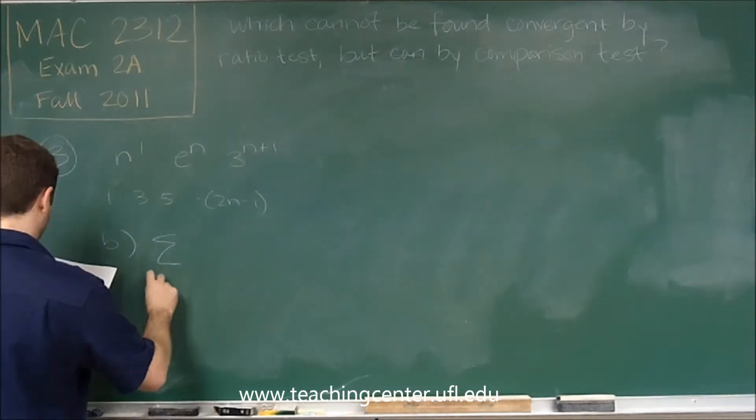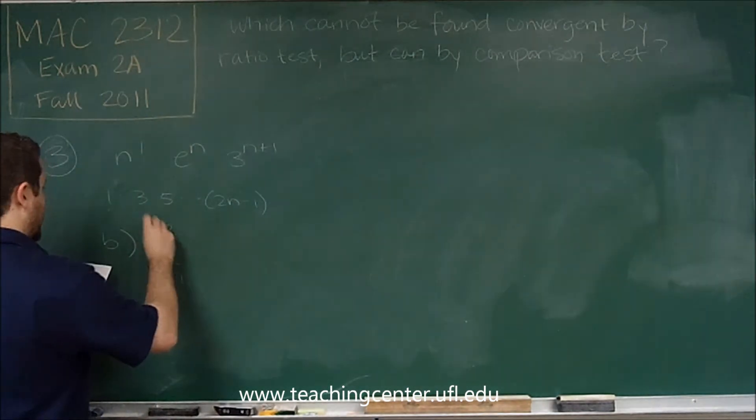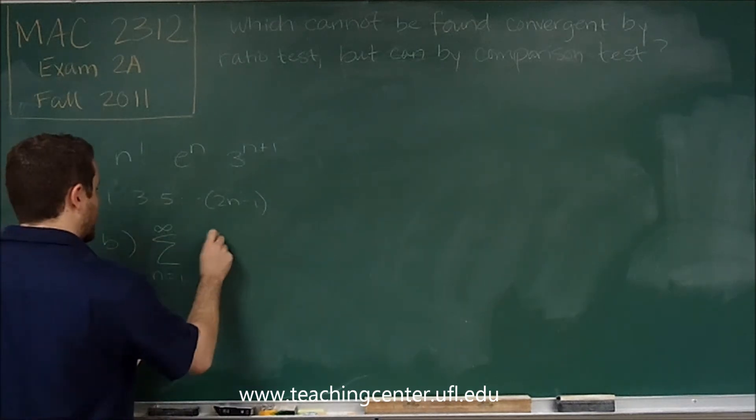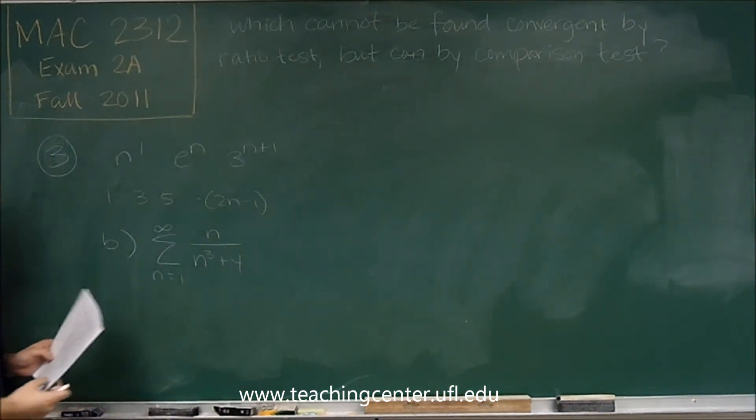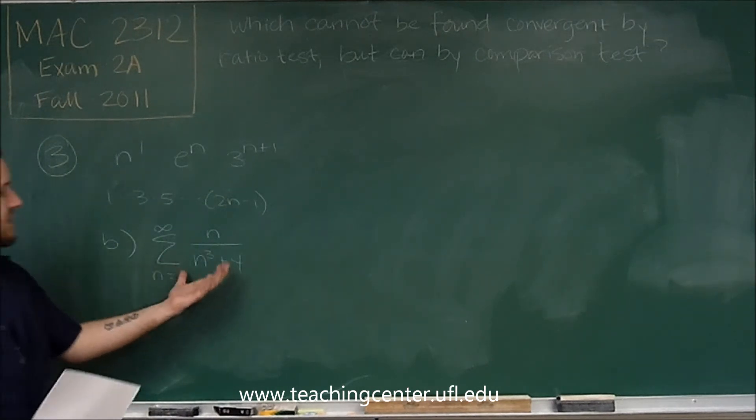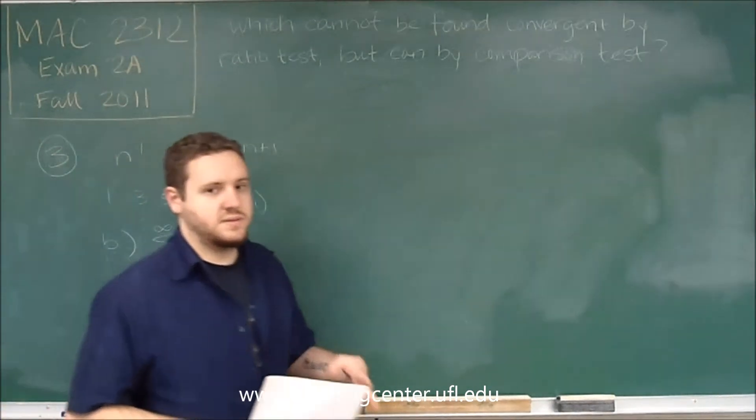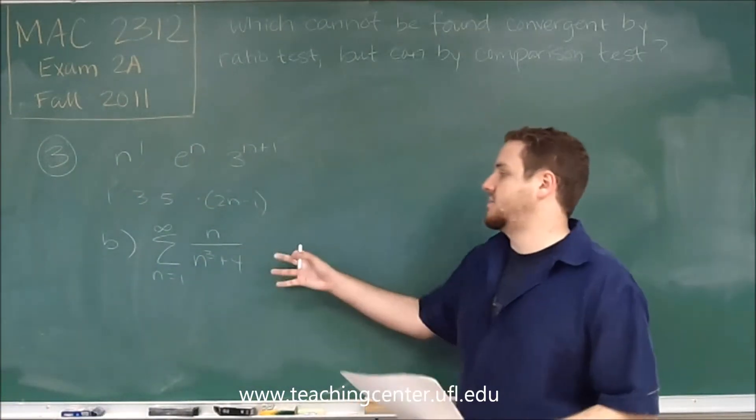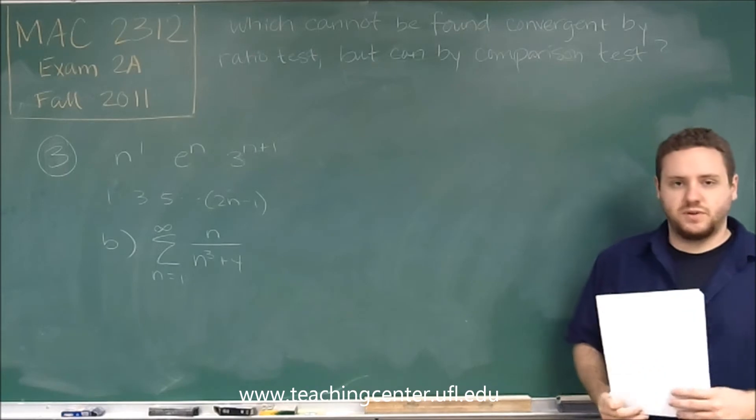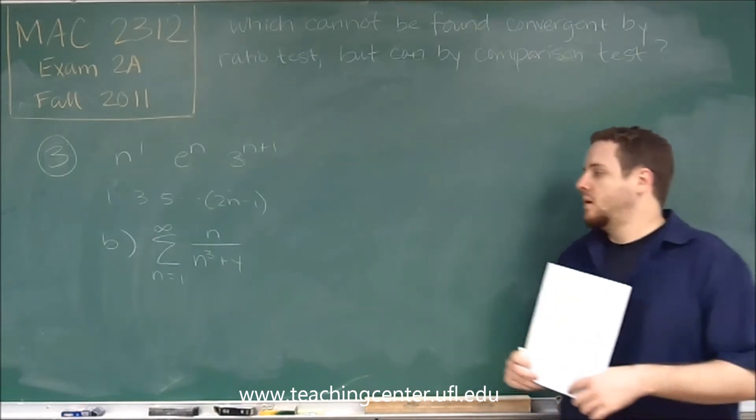So for b, we have the series from 1 to infinity, n over n cubed plus 4. Now you might think this is a type of series that you had seen before you learned how to do the ratio test. It's just made up of polynomials, it's a rational function.